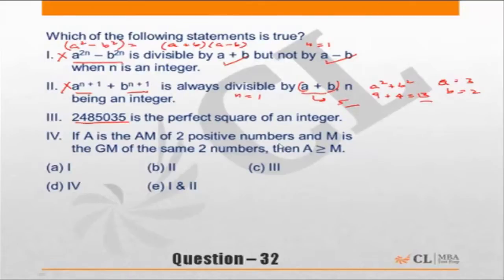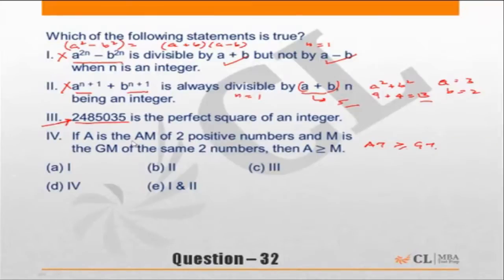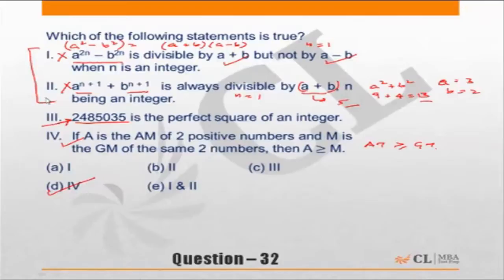For statement 3, there's no shortcut — you need to find the square root of that number directly. You could defer statement 3 and come to statement 4: we know that the arithmetic mean is always greater than or equal to the geometric mean of two numbers, so statement 4 is definitely correct. Choice D is the correct answer. I hope you understand how I handled statements 1 and 2 — this is a method I'd want you to employ in algebra questions as well.